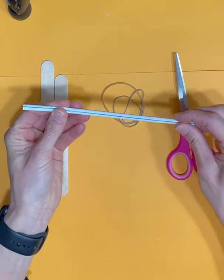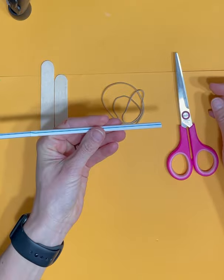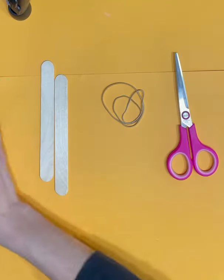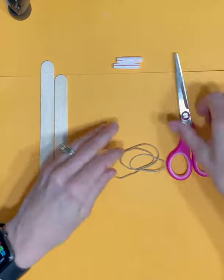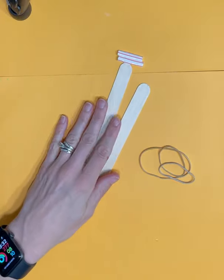How this starts is you're going to want to cut two pieces of your straw about an inch or an inch and a half long. I already have two pieces cut, so I'm going to use those two pieces.